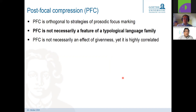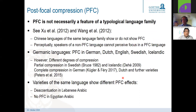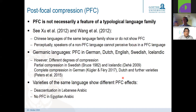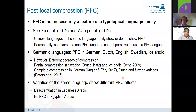Post-focal compression is not a feature of a particular language family or language variety. Studies by Xu and colleagues and Wang and colleagues analyzed different Chinese languages of different and identical language families, showing like the Mandarin and Cantonese case that some languages have post-focal compression and others do not. Interestingly, from a perception perspective, speakers from a non-post-focal compression language cannot easily perceive focus in a post-focal compression language — they do not have the phonological feature of post-focal compression in their grammar.